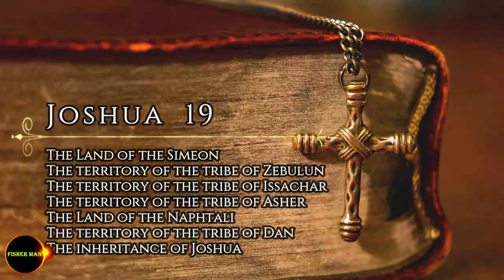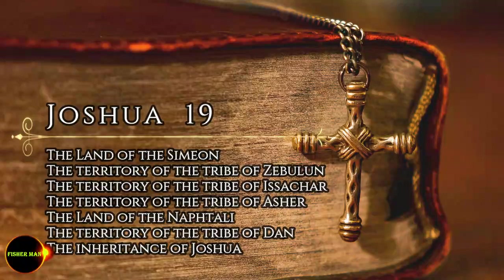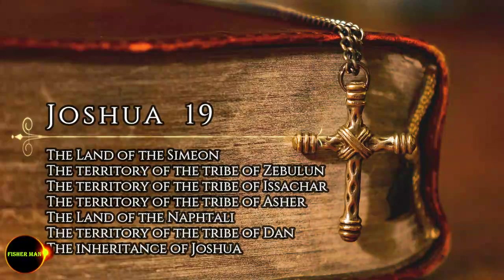The third lot came up for Zebulun, clan by clan. The boundary of their inheritance went as far as Sered. Going west, it ran to Marla, touched Dabisheth, and extended to the ravine near Jachnium. It turned east from Sered toward the sunrise to the territory of Kisloth-Tabor, and went on to Dabaroth, and up to Japhia. Then it continued eastward to Gath-Hefer and Eth-Kazan. It came out at Rimen, and turned toward Nia. There the boundary went around on the north to Hanathon, and ended at the valley of Ifta-El.